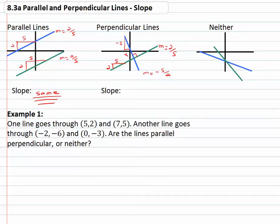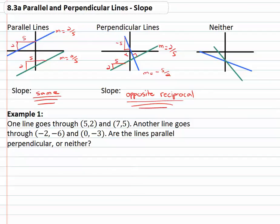You might notice these slopes have a lot in common. They both use the numbers two and five, but they're flipped — we call those reciprocals, where the fraction is flipped over. You'll also notice one is positive and the other is negative, so we call that opposite. Opposite and flipped fractions are called opposite reciprocals. Perpendicular lines have opposite reciprocal slopes.